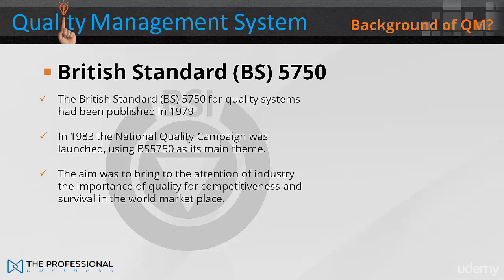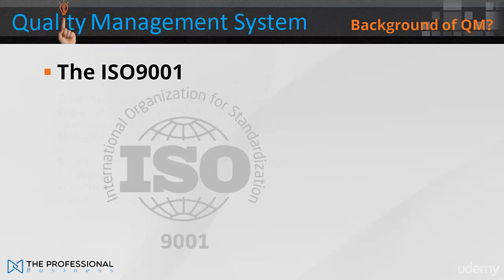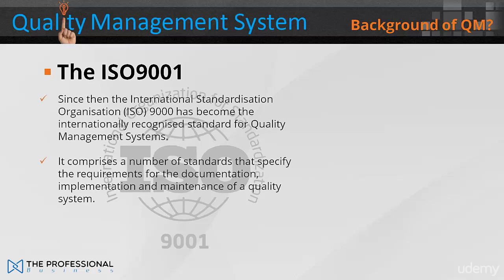The aim was to bring to the attention of industry the importance of quality for competitiveness and survival in the world marketplace. Since then, the International Organisation for Standardisation's ISO 9000 has become the internationally recognised standard for quality management systems. It comprises a number of standards that specify the requirements for the documentation, implementation and maintenance of a quality system.